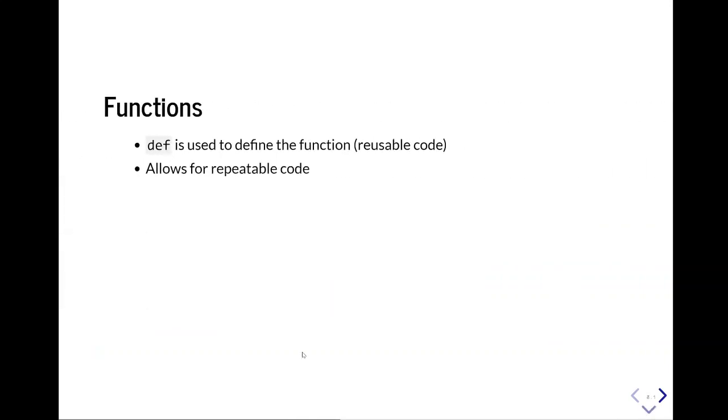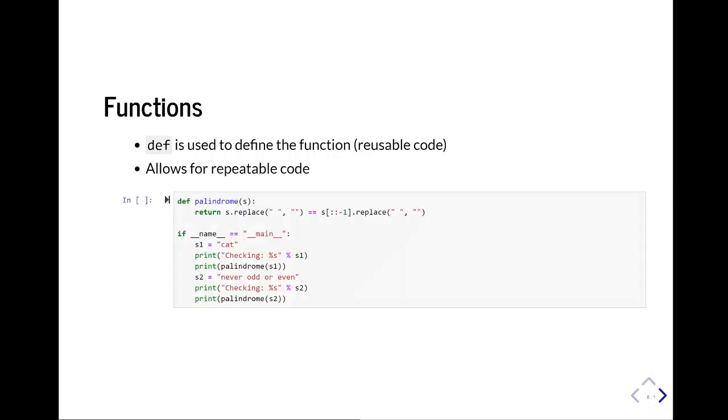In part one, we saw functions, but I'm just going to reiterate some important things, that we use the def to define a function, and it allows us to use repeatable code. Let's say we want to check if a string is a palindrome, and we need to do this multiple times in our program. So we can create, we can either use a lambda function, or we can just do a simple function to have it over and over again, because let's say we need to use it all over our function.